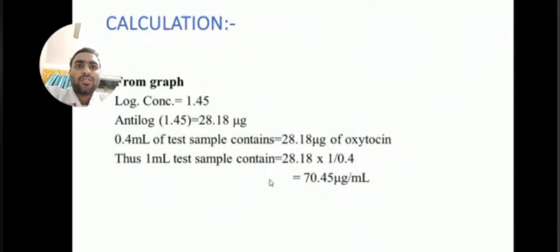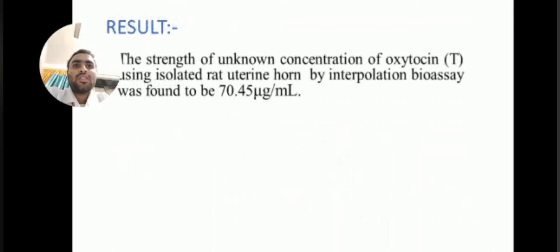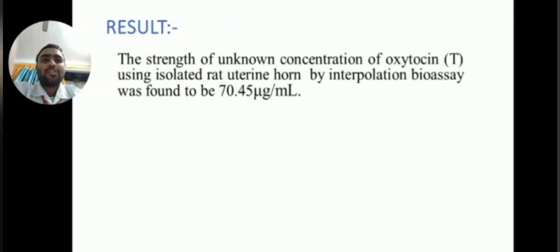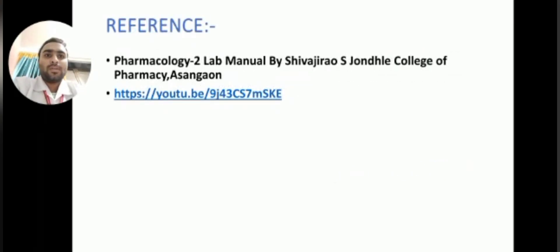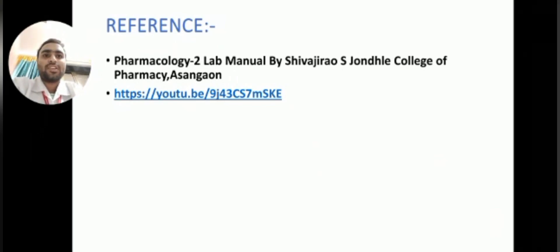The result: the strength of the unknown concentration of oxytocin, estimated using the isolated rat uterine horn by interpolation bioassay, was found to be 70.45 micrograms per ml of solution. The reference is the pharmacology lab manual by Shivajira S. Jondle College of Pharmacy, Asangao, along with a YouTube link provided.